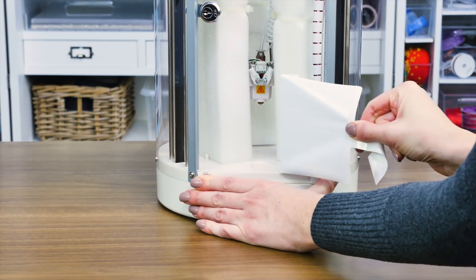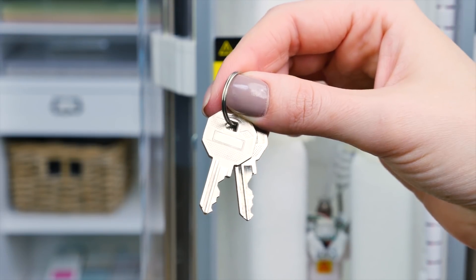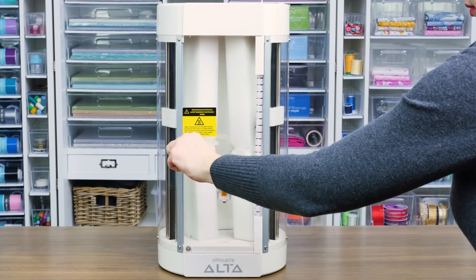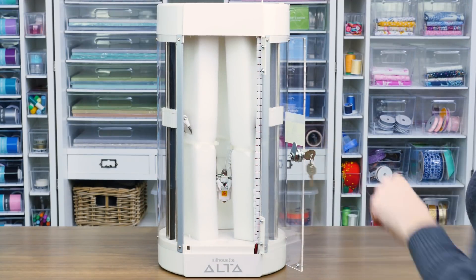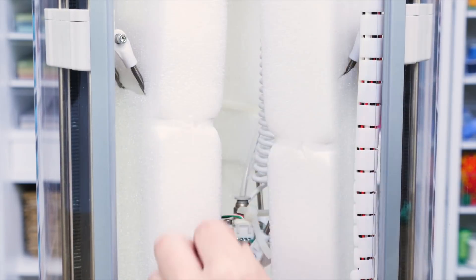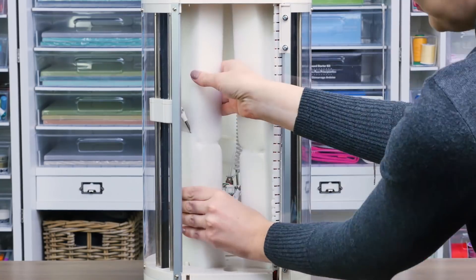Once you've confirmed all items are present, discard any tape, cut any ties that are holding the foam pieces in place, and remove the foam pieces from the machine.